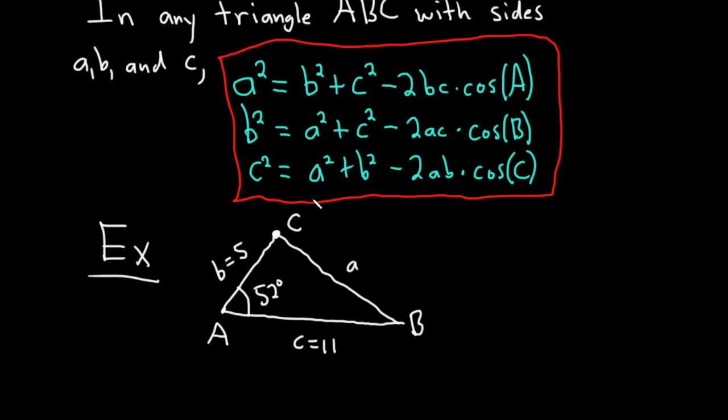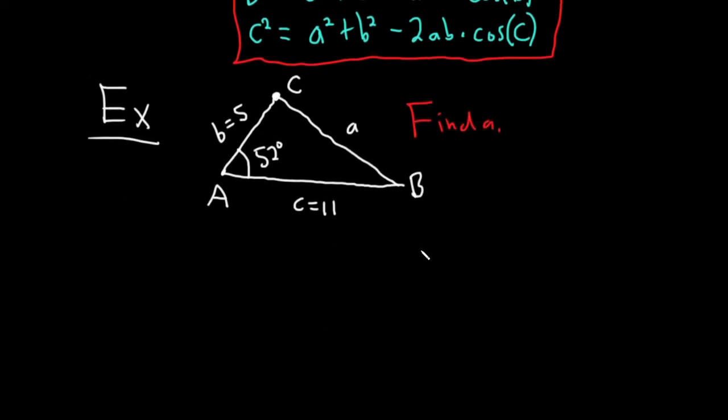And the question here is to find a, so find little a. Okay, so let's go ahead and do it, and we can do it with the law of cosines. So we know that a squared is equal to, and again, you square the other ones, so b squared plus c squared, minus 2, and then you multiply them, bc, times the cosine of the angle opposite little a.